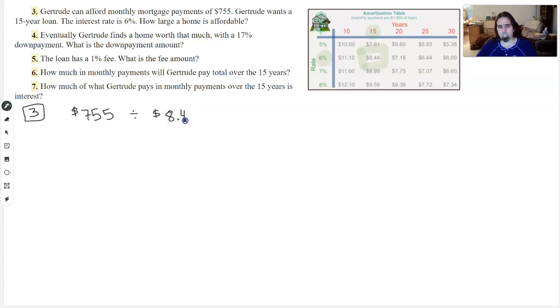Every time she writes a check she gets $1,000 of loan because that's what the table says. So how many thousand dollars of home size will she get?